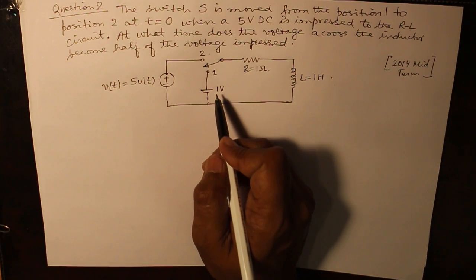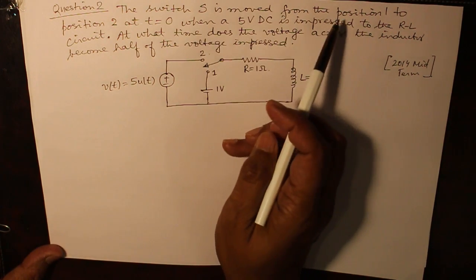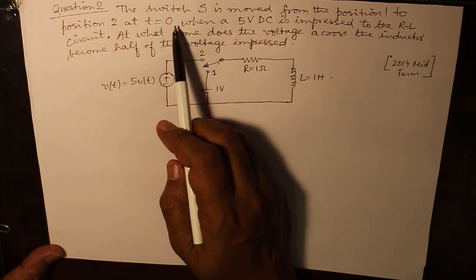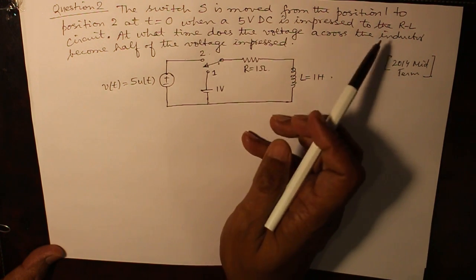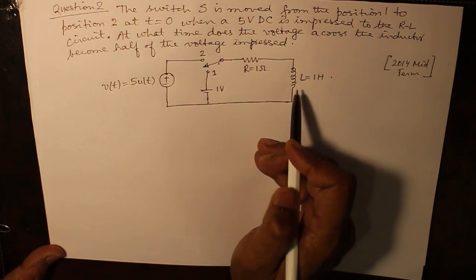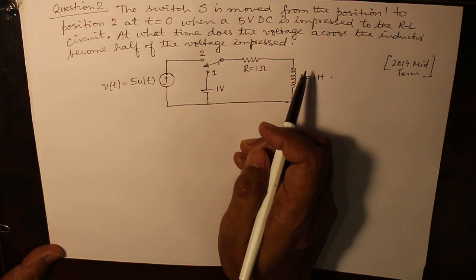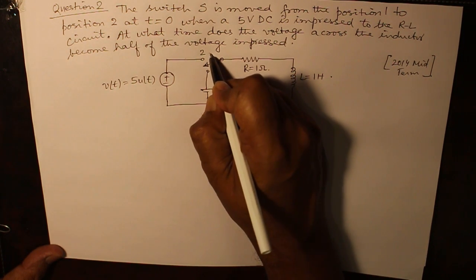This question has appeared in 2014 midterm exam. Here the switch S is moved from position 1 to position 2 at T equals 0 when a 5 volt DC gets impressed to the RL circuit. At what time does the voltage across the inductor become half of the voltage impressed? So basically we want to find out the current which will flow in the circuit after the switch has been moved from 1 to 2.